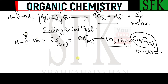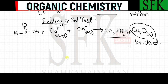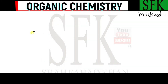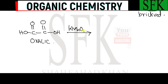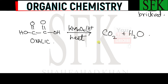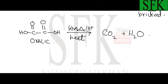The next important acid is ethanedioic acid. 'Ethane' means two carbons, and 'dioic acid' means two carboxylic acid groups. This is also referred to as oxalic acid. For the oxidation reaction with acidified KMnO4 and heat, the products are the same as with methanoic acid: carbon dioxide and water.